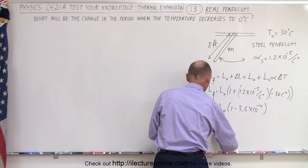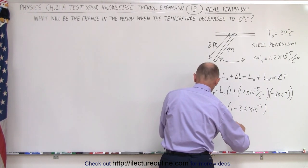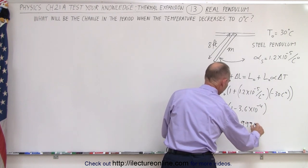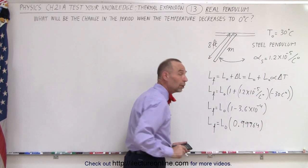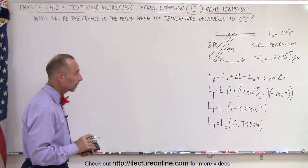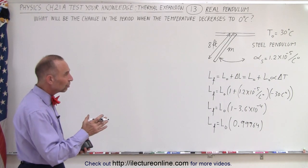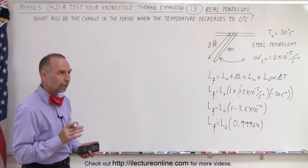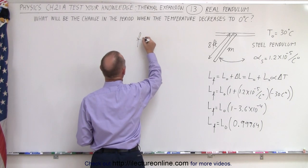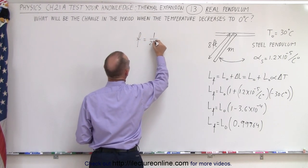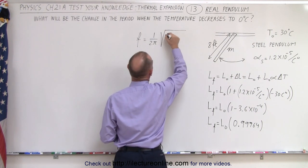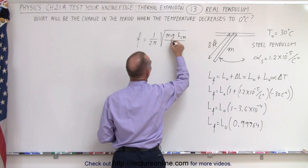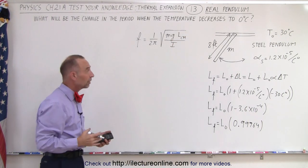So L-final equals L-initial times 0.99964. Now we know how the length changes. We need to find the relationship between the change in length and the period. The frequency of oscillation for a real pendulum is equal to 1 over 2π times the square root of mg times the length to the center of mass divided by the moment of inertia, because we're dealing with a real pendulum.